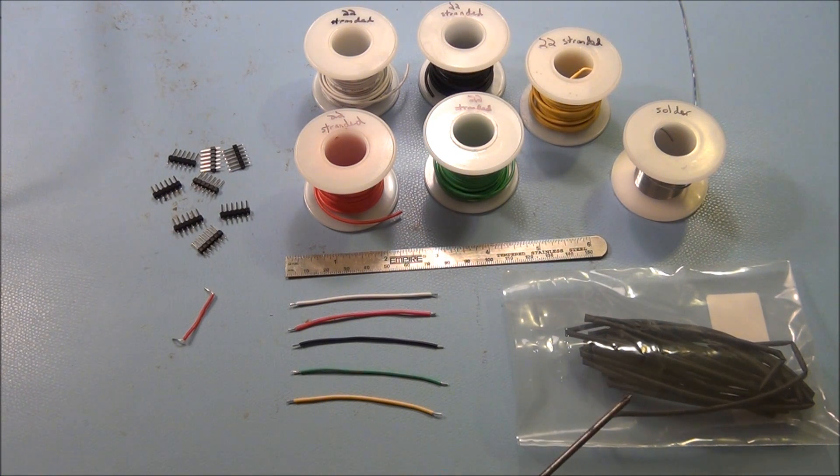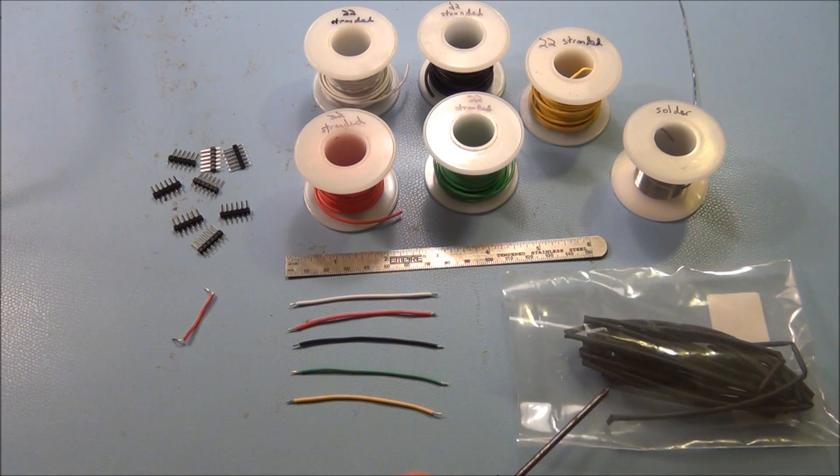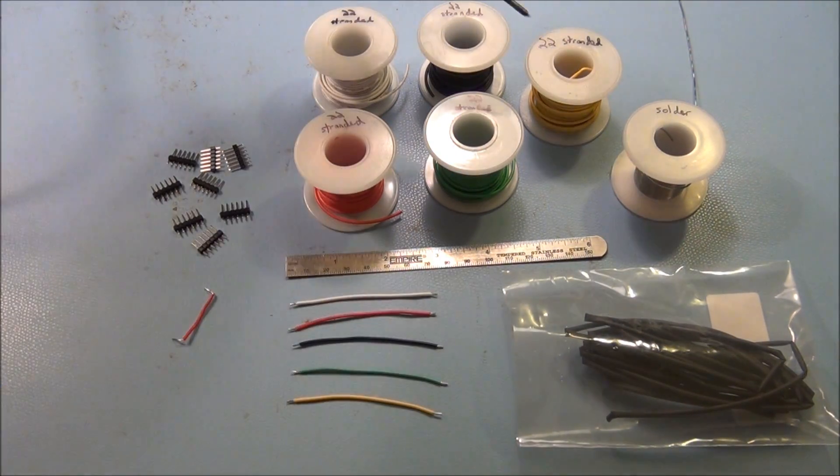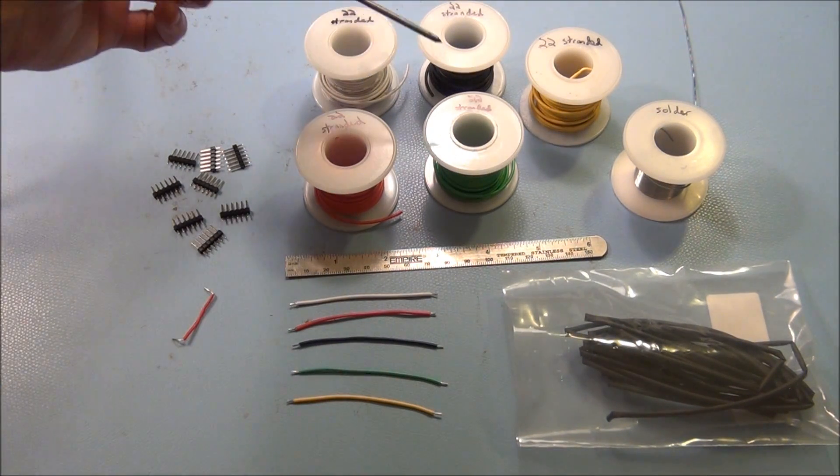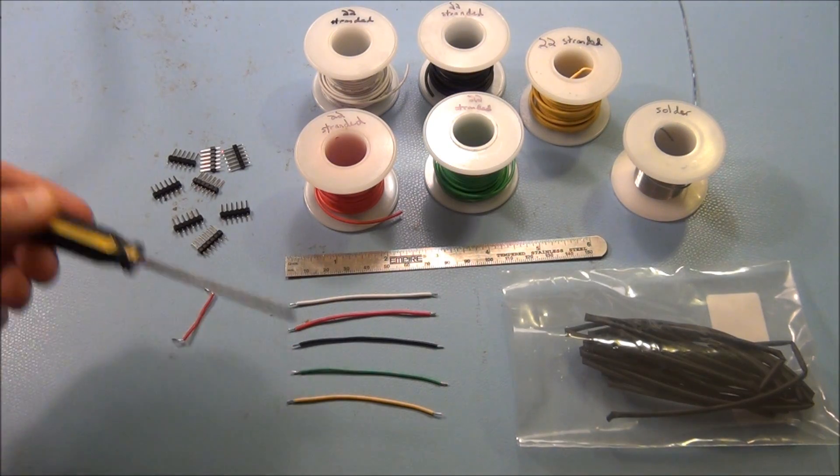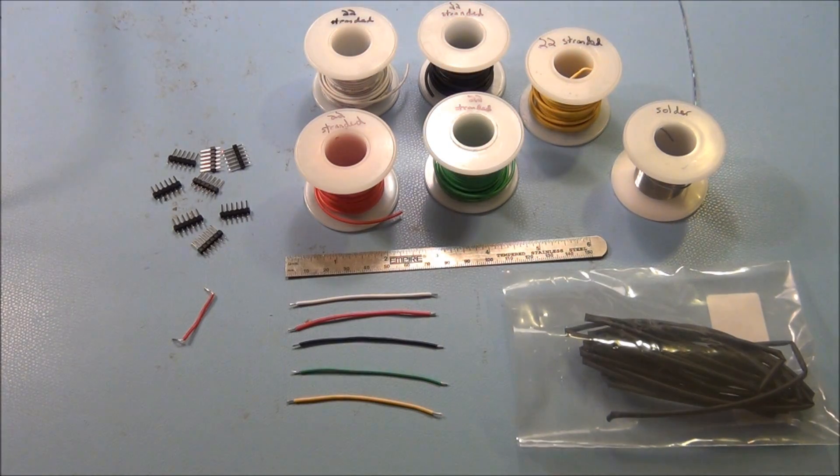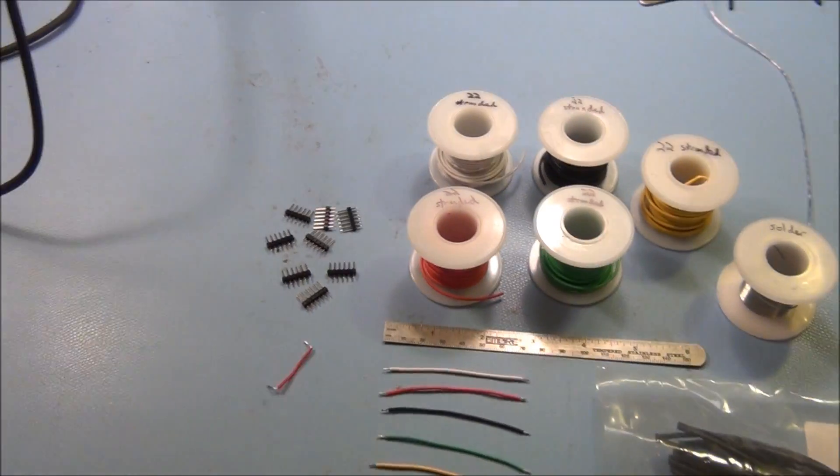And then also we have here our heat shrink tubing and of course our five spools of stranded wire so we can make more of these if need be. And then our solder, and we have our soldering iron fired up and ready to go.